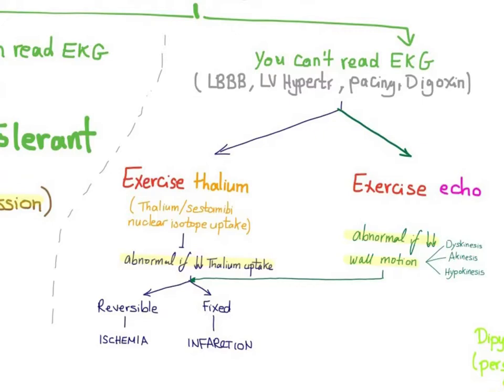Or we can do the exercise echo. The patient runs on the treadmill, but instead of an EKG, we do echo. Abnormal echo is decreased wall motion, maybe dyskinesis, akinesis, or hypokinesis.